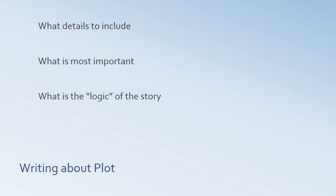When you're writing about plot, some basic things to think about. First, what are the details that you want to include? You're going to have to ask yourself what is most important in the story versus what is least important. And you're going to have to think about the logic of the story — why do things happen in the way that they do? Why do the events turn out the way they do? What is the reason behind that?